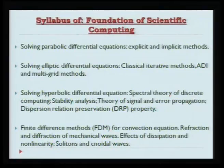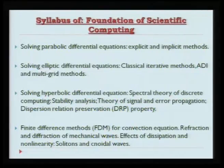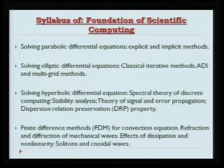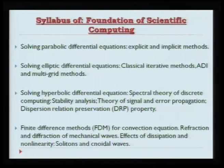We will also talk about the alternating direction implicit method, or ADI method. This was quite popular about 40-50 years ago but has been overtaken by other methods. One of the newer methods we will include in this course is called the multi-grid method. This is a huge area of research that could cover a full course itself, but we will simply introduce the scientific aspects of multi-grid methods.